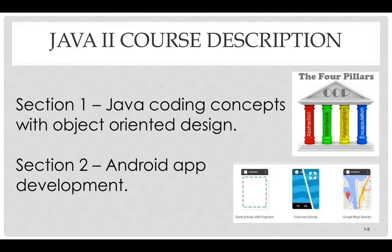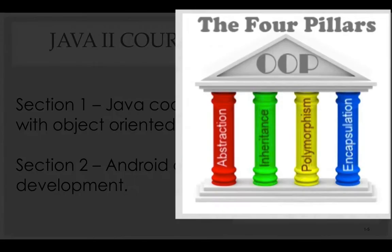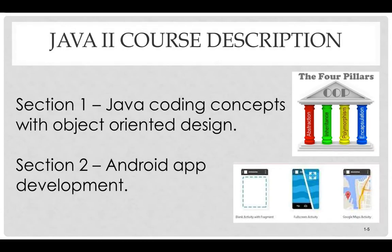In this course, we're going to split it into two different parts. In the first half, we're going to talk about Java coding concepts with object-oriented design. The four pillars of OOP are abstraction, inheritance, polymorphism, and encapsulation, and we'll be focusing on those for the first half.